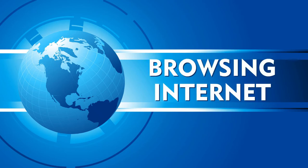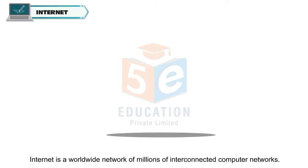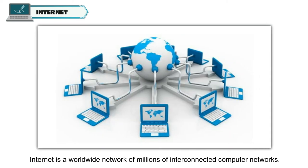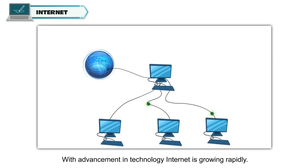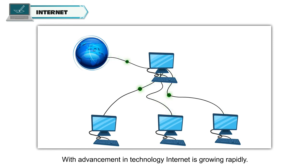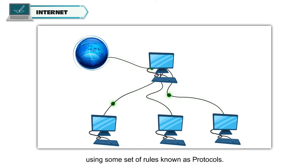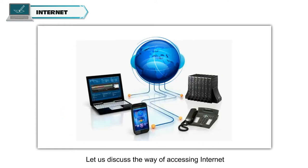Browsing Internet. The Internet is a worldwide network of millions of interconnected computer networks. With advancement in technology, the Internet is growing rapidly. The computers on the Internet communicate with each other using some set of rules known as protocols. Let us discuss the way of accessing the Internet and some communication services provided by it.